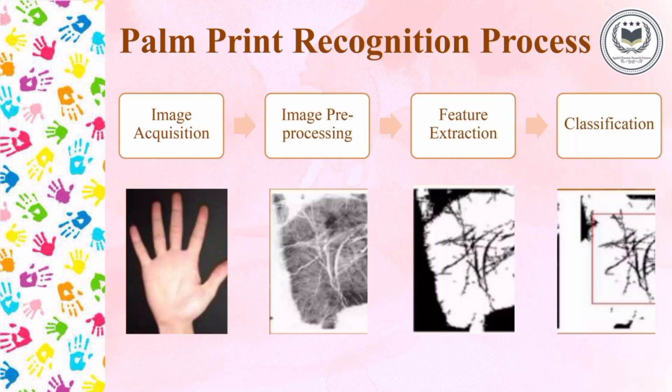The palm recognition process involves four steps. First, the image is taken. Then it is pre-processed. After that, the features are extracted and classification is done, followed by comparison if needed.